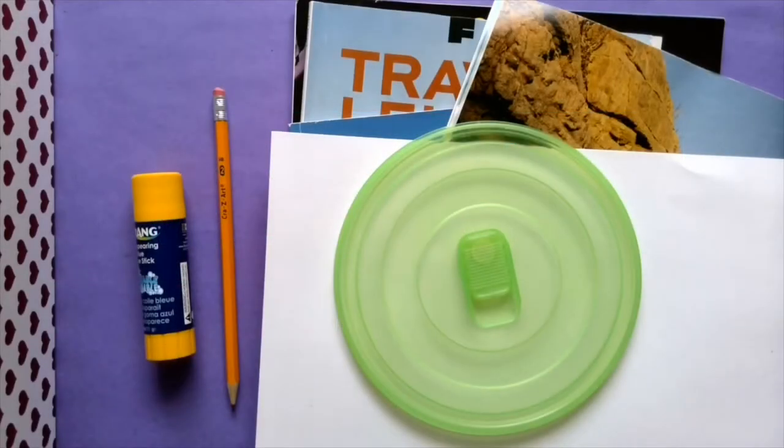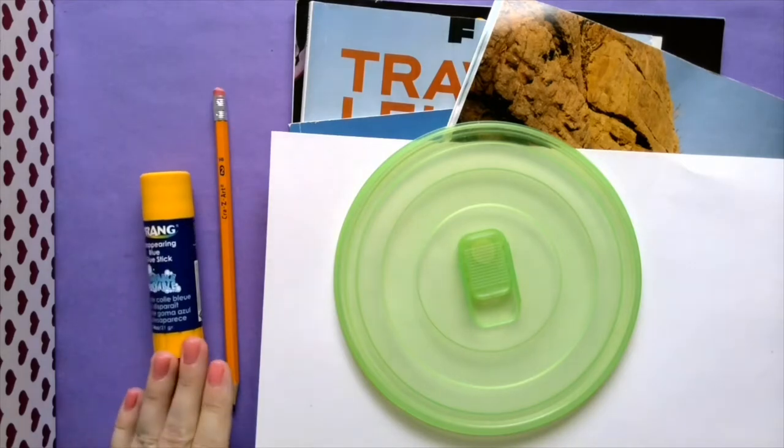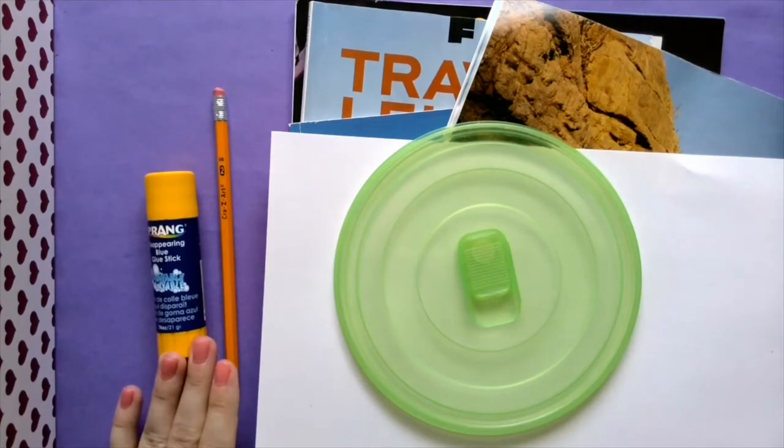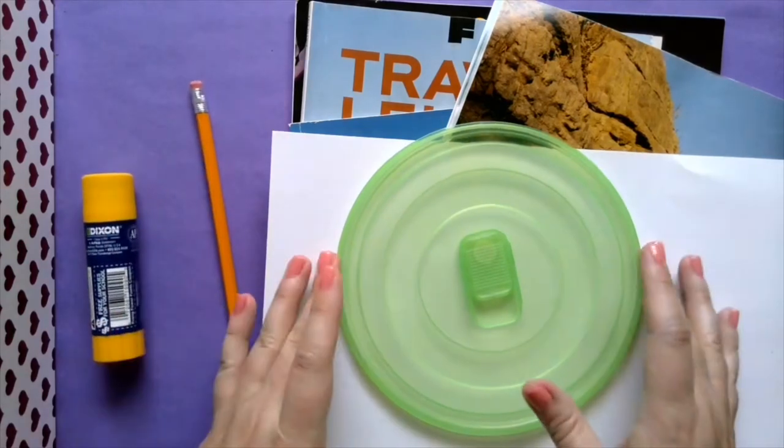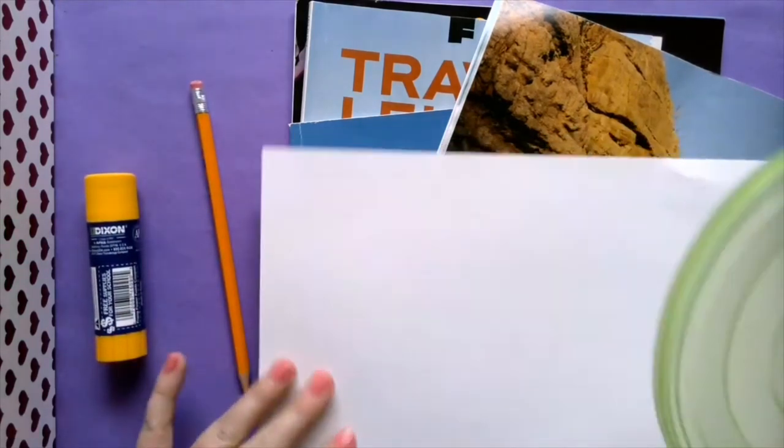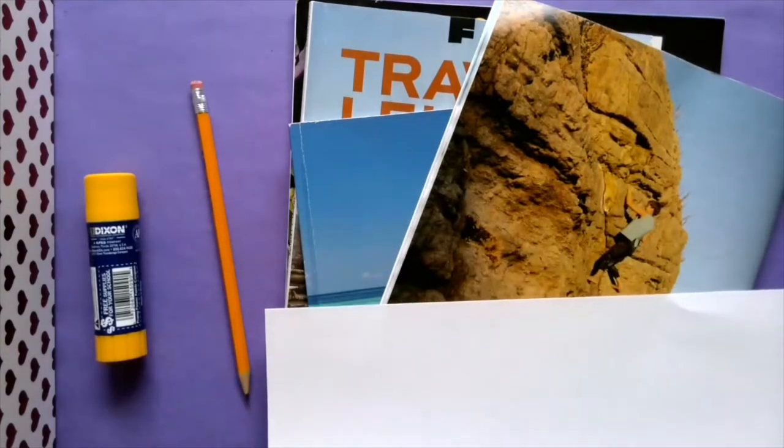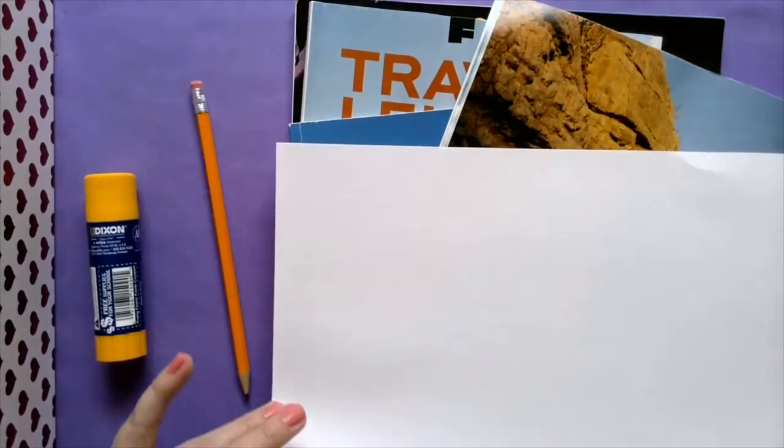Hey guys, today we are going to be making an Earth Day collage. To get started, all you're going to need is some sort of glue—you can use white glue or glue stick—a pencil, something round to trace for the paper you're going to be working on.